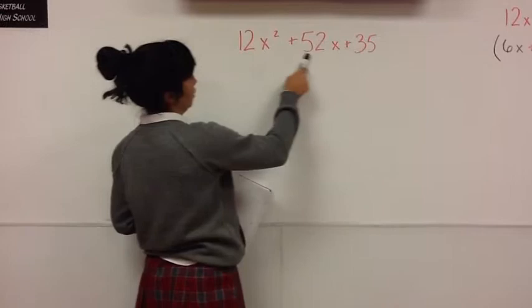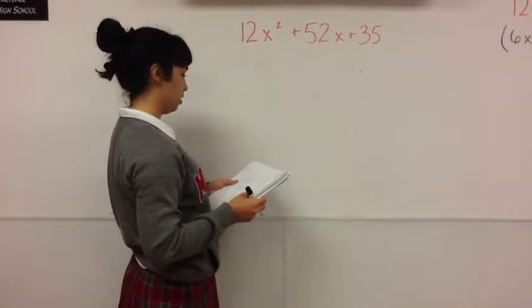Factor the polynomial completely: 12x squared plus 52x plus 35.